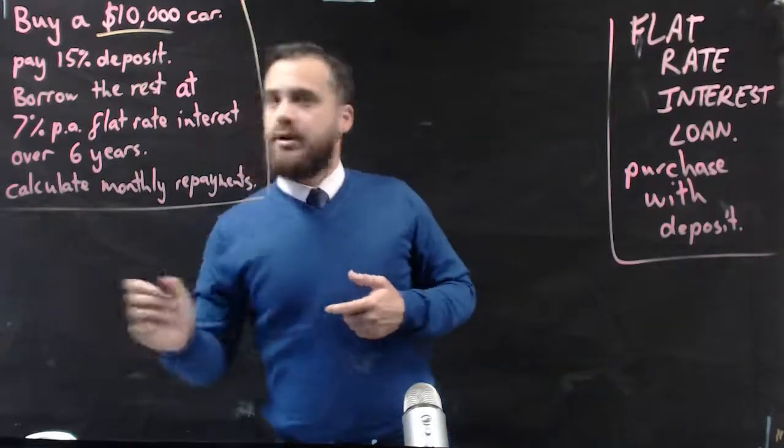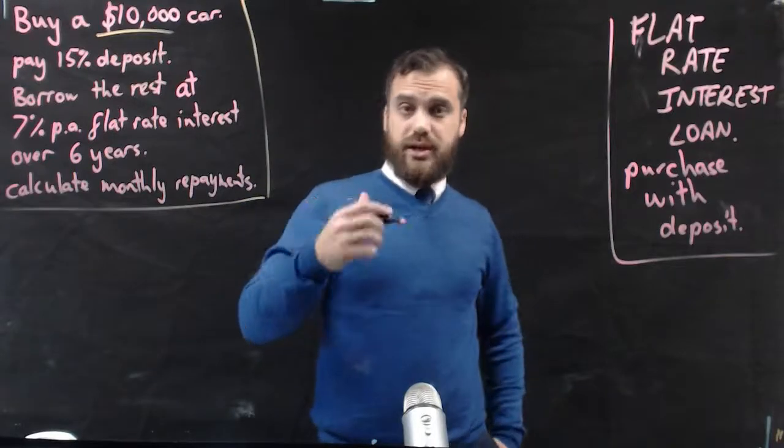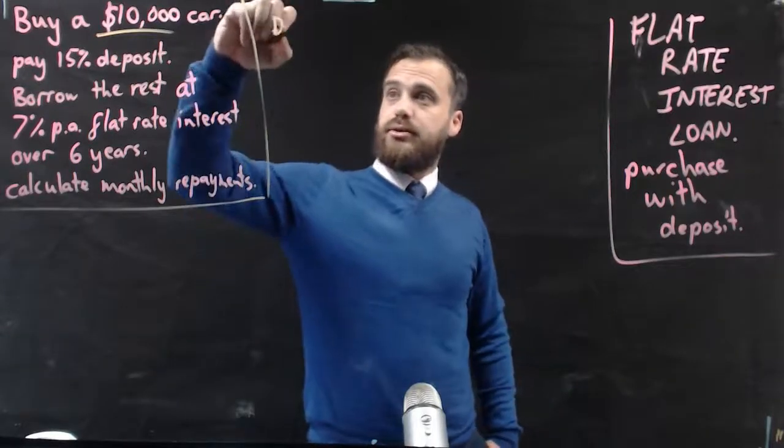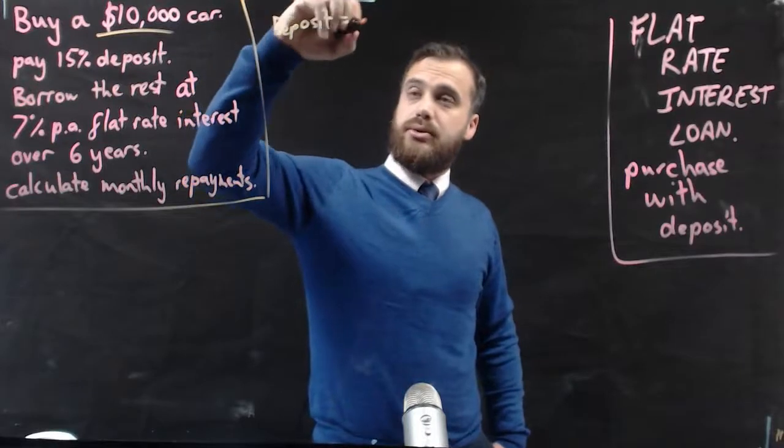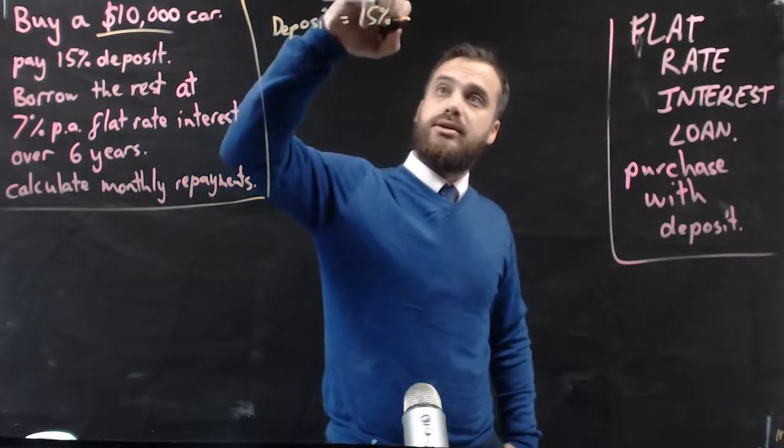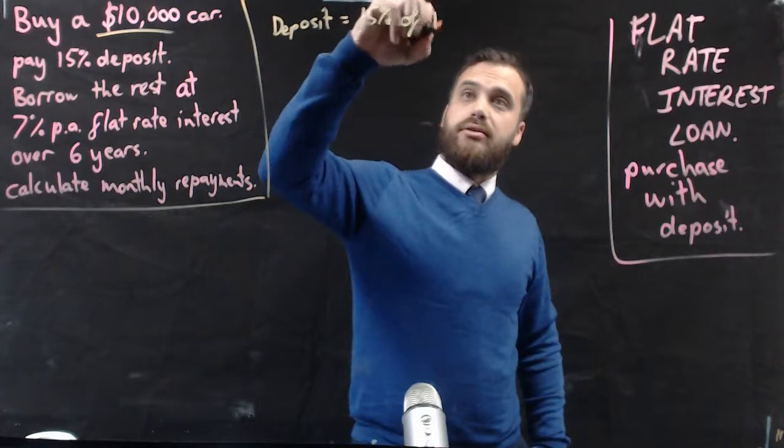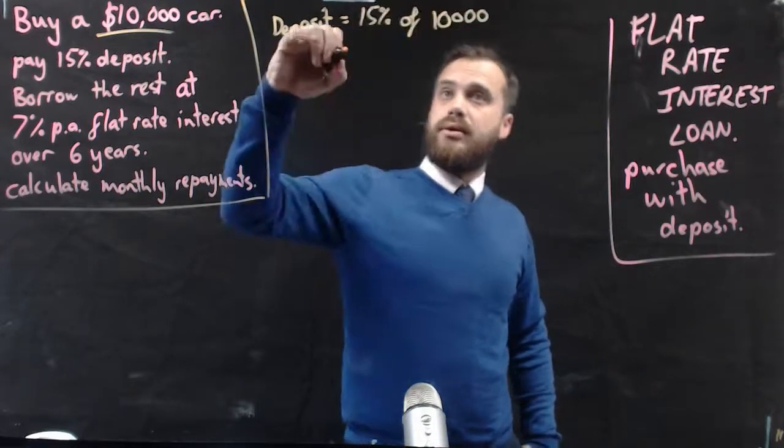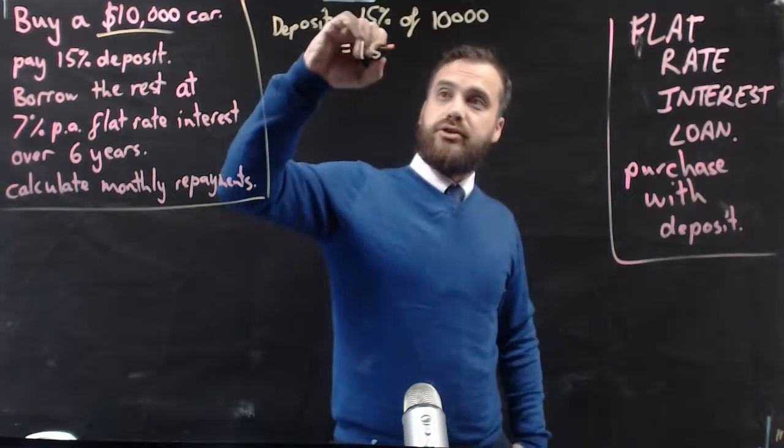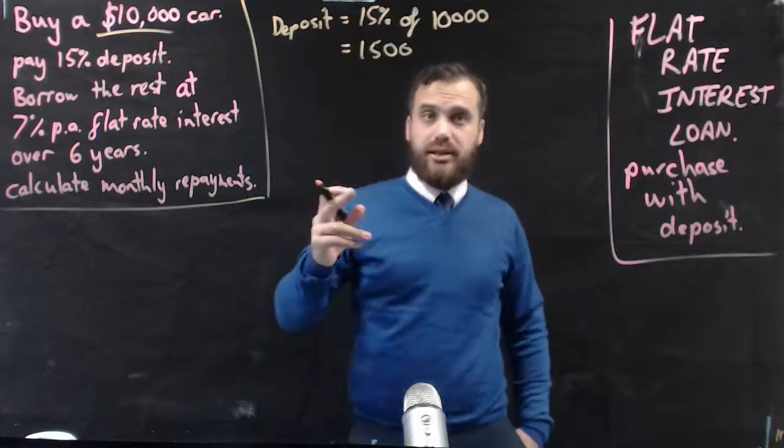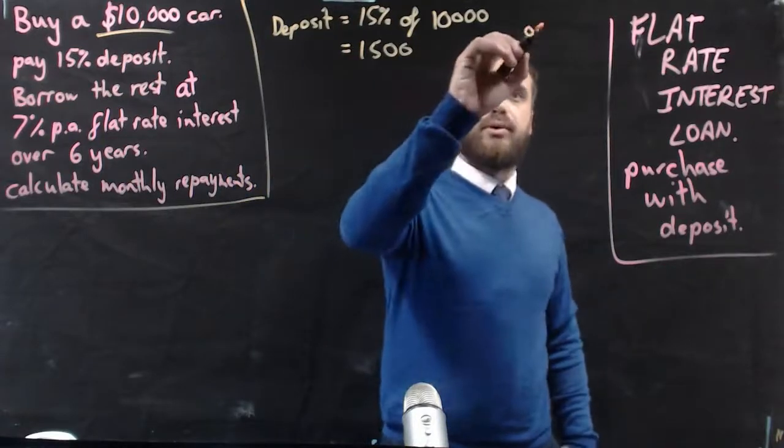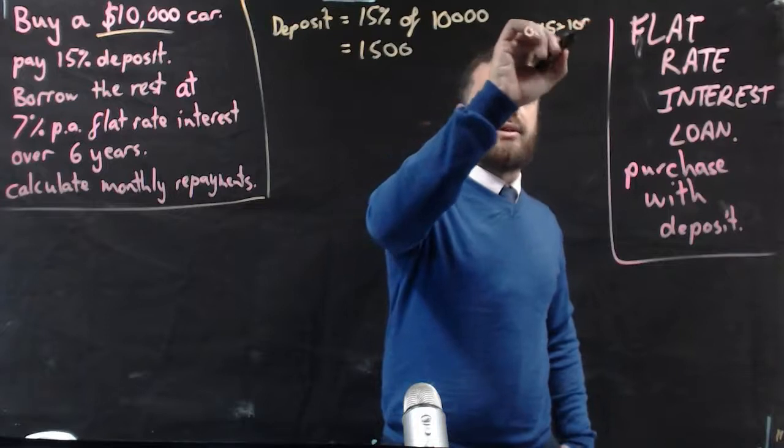Okay, so first thing we need to do is know the size of our deposit. So the deposit is equal to 15% of 10 grand, which is $1,500. You can put that in your calculator. The way that I've done that is 0.15 times 10 grand.